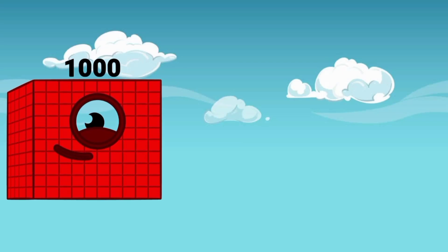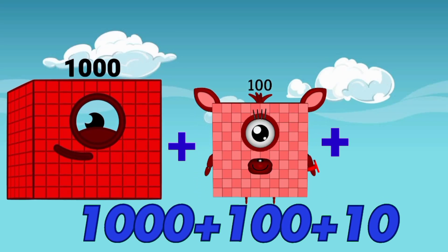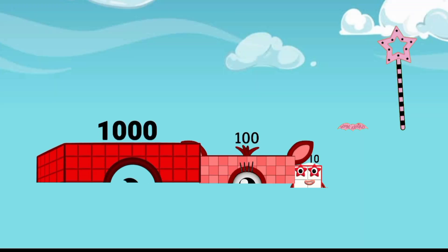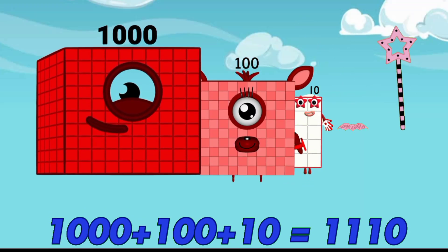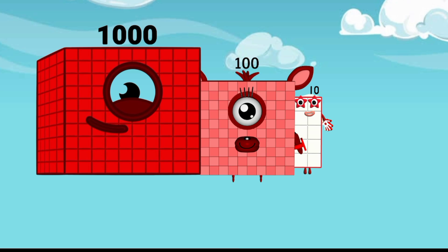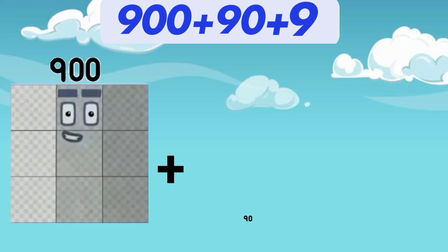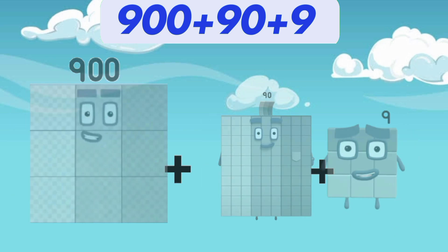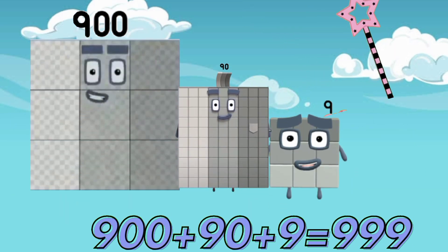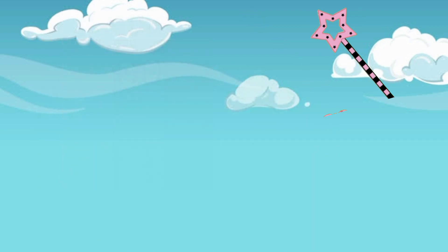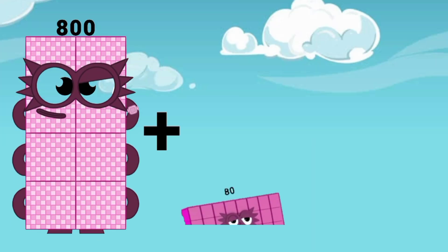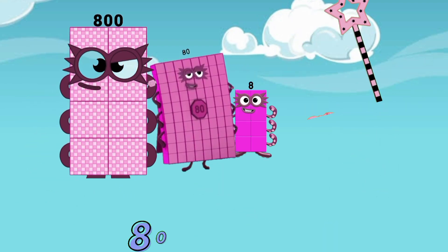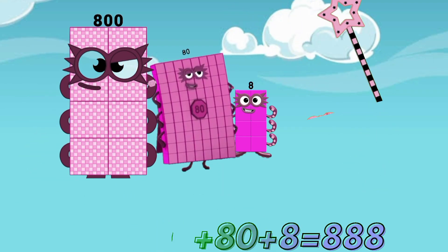One thousand plus one hundred plus ten is equal to one thousand one hundred and ten. Nine hundred plus ninety plus nine is equal to nine hundred ninety-nine. Eight hundred plus eighty plus eight is equal to eight hundred eighty-eight.